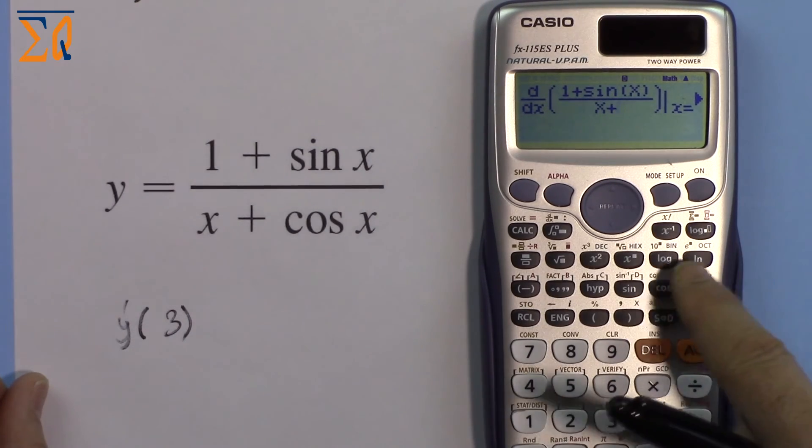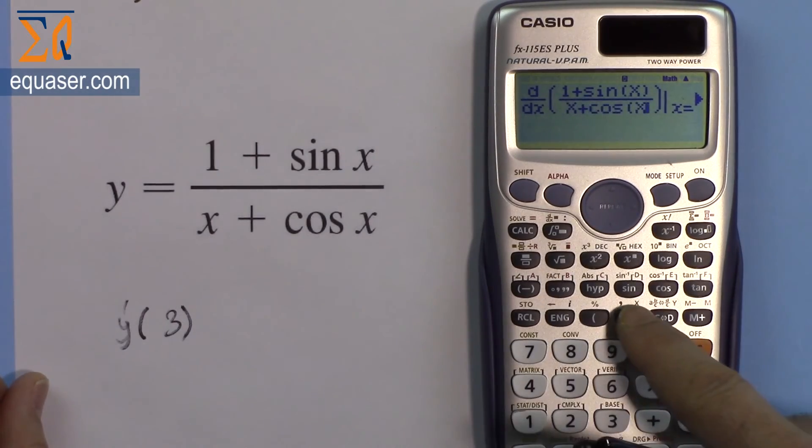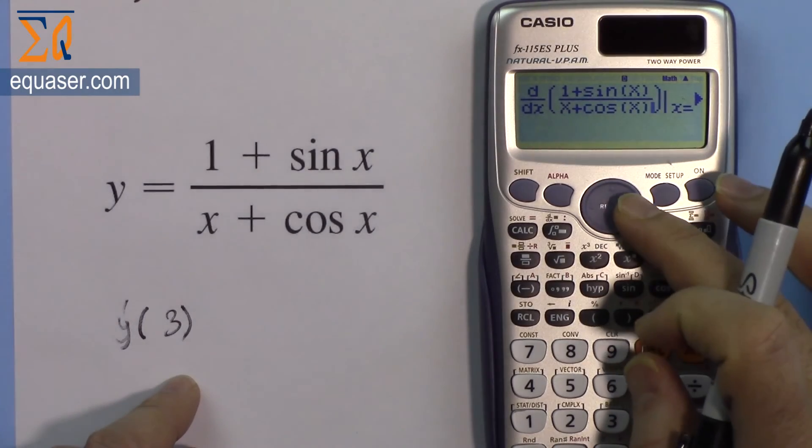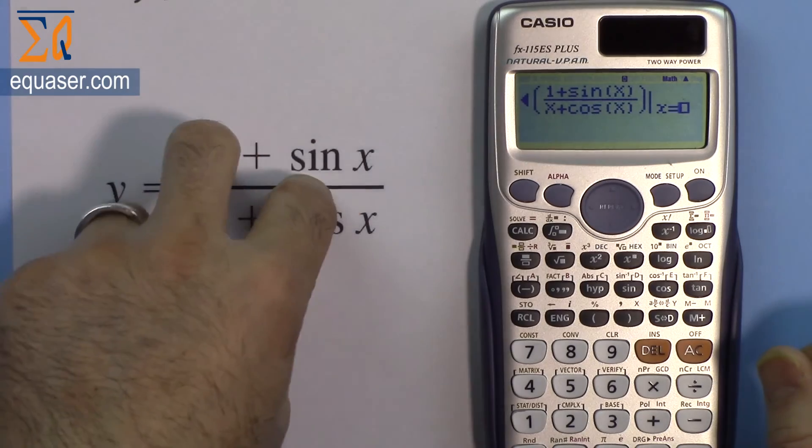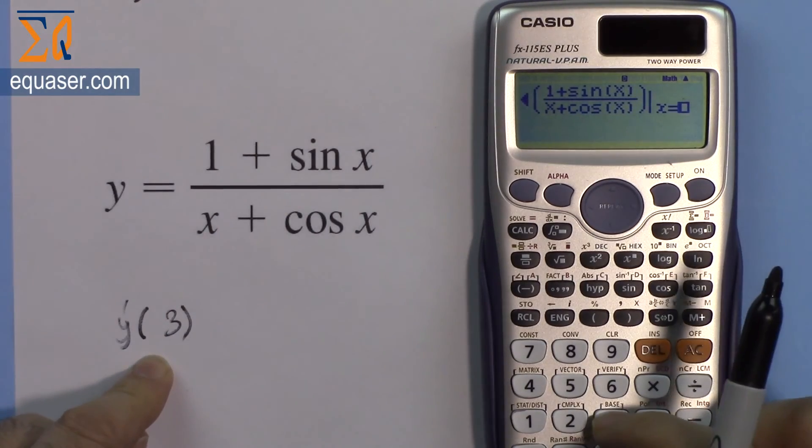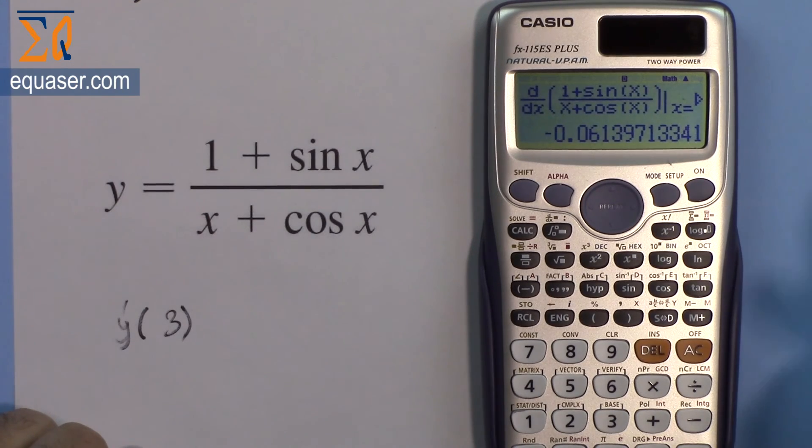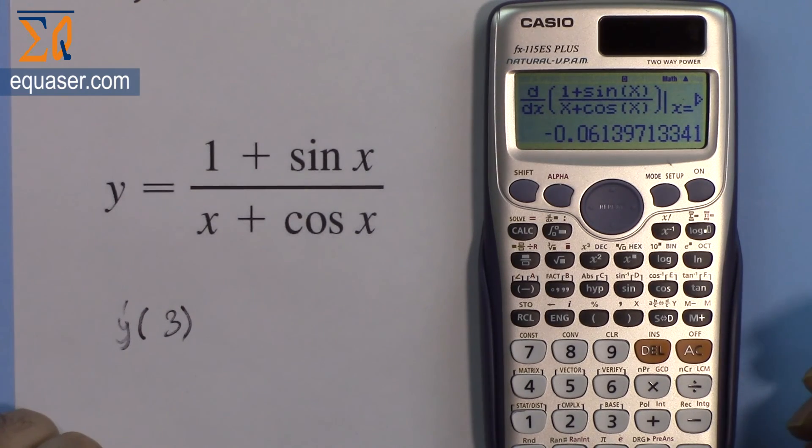Plus cosine of, and then alpha x, and then close. So this looks exactly as it's here. Now with the right arrow, we are evaluating the derivative of this equation at 3. So that's 3. Equal sign. And that's the answer: -0.0613797.